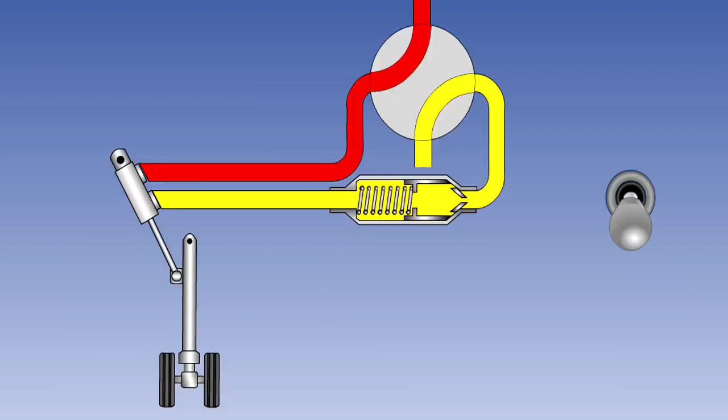A restrictor valve is used to slow the operation of a service when either gravity, in the case of gear lowering, or air flow in the case of flaps retracting, may cause that service to overspeed. The valve is always placed to restrict the flow of return fluid. If it was placed on the inlet side of the actuator whose speed is being controlled, it would cause a pressure drop in the cylinder, leading to cavitation, which could cause damage to the actuator.